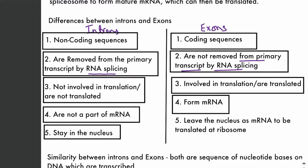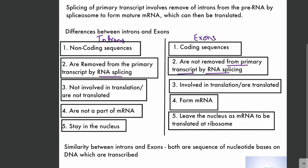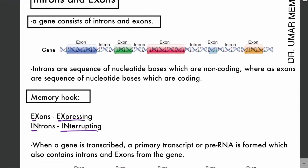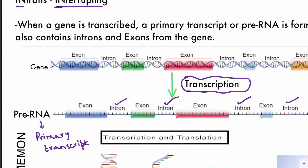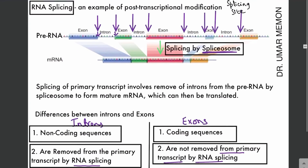Since splicing occurs in the nucleus, introns stay in the nucleus whereas exons join to form messenger RNA, which leaves the nucleus and binds to the ribosome for translation. The similarity between introns and exons is that both are sequences of nucleotide bases on DNA which are transcribed. During transcription both introns and exons are transcribed, and after transcription the pre-RNA is further modified — through splicing — to make messenger RNA. RNA splicing is an example of post-transcriptional modification, meaning modification after transcription.